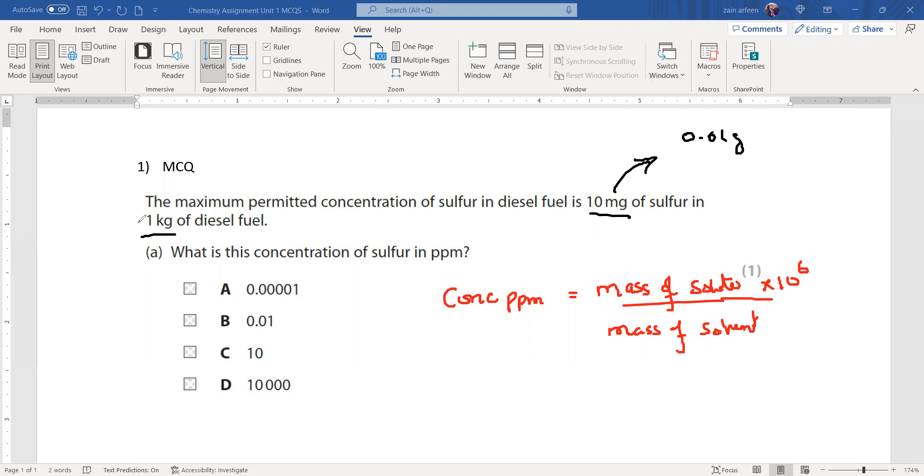And here, this is in kilograms. So we have to convert, both should be in same unit. Either I can convert this milligram into kilogram as well, or I convert this into grams and the mass of diesel also in grams. So I multiply by 1000. So this will be 1000 grams.